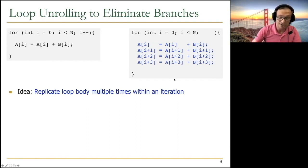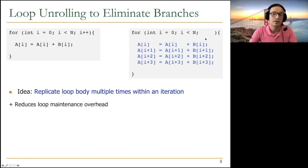So you want to get rid of branches as much as possible. And the idea in loop unrolling is to replicate the loop body multiple times within an iteration, as you can see over here. But of course, now you're doing four iterations, four original iterations within one iteration. So you need to make sure you increment the values correctly. And that's going to be a problem, actually. But if you do this now, you don't execute as many branches. You don't execute as many loop control instructions. So you reduce the loop maintenance overhead.